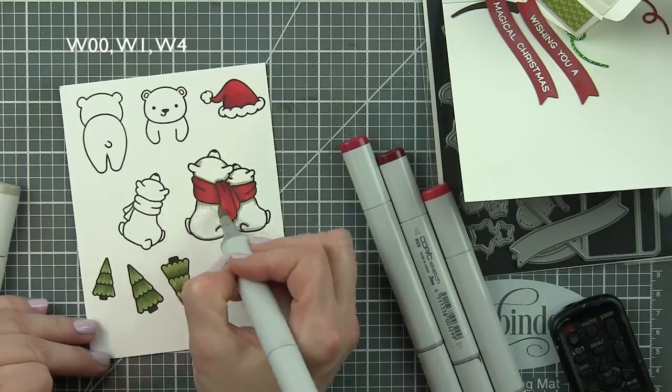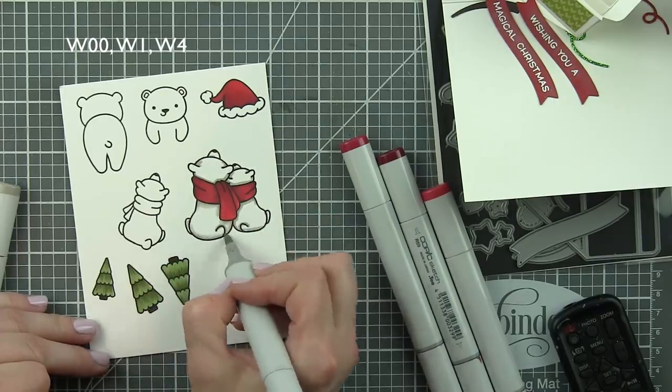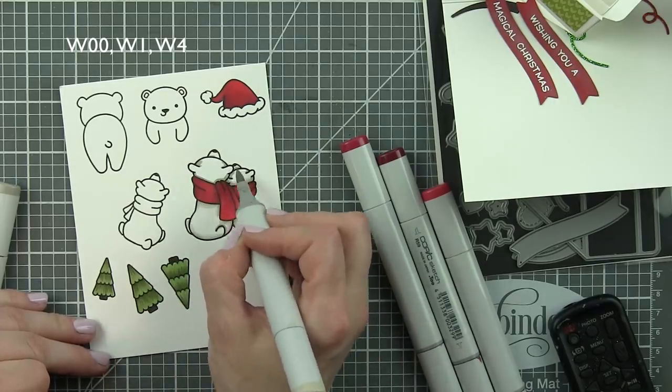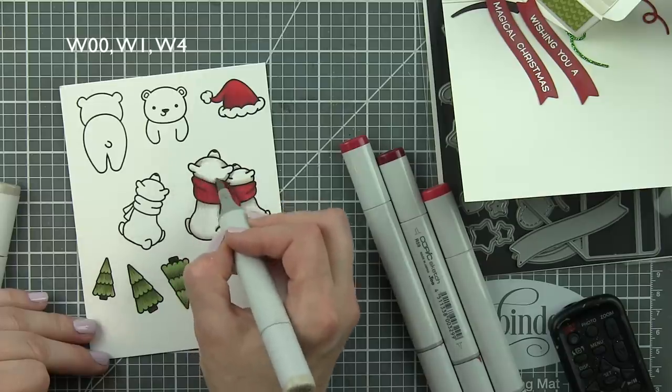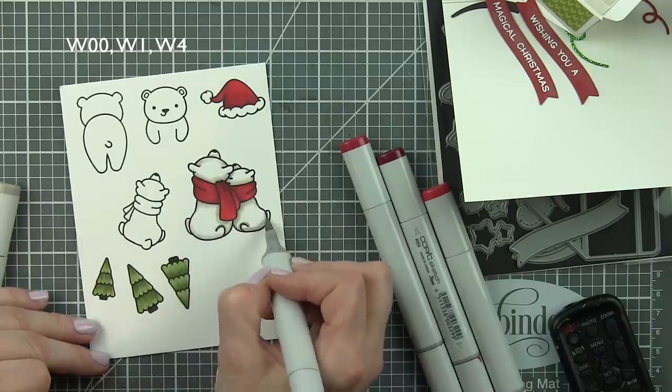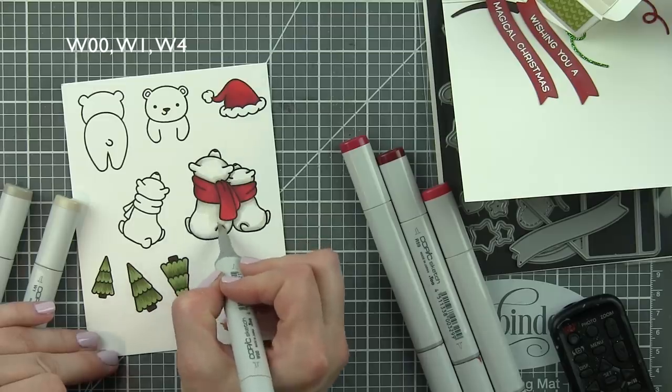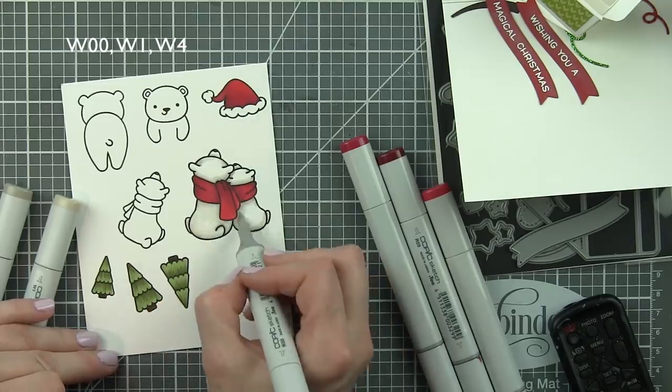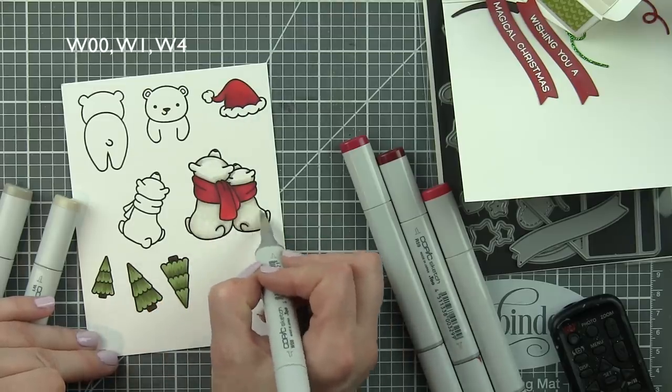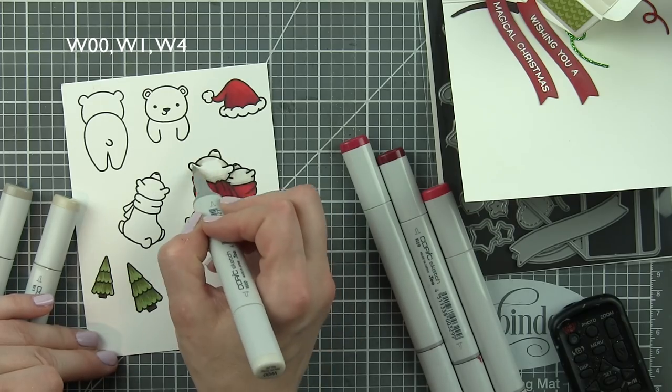Let's add some color to these bears with warm gray 4, 1, and 0. So this is just a hint of color. It adds more shading than anything. And even though they have quite a bit of gray tint to them, they still appear white. So it really just gives some nice depth and dimension to these cute little bears.